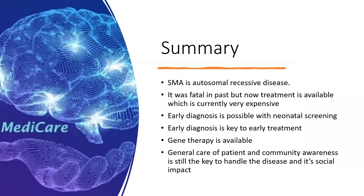In summary, SMA is an autosomal recessive disease that was fatal in the past but now has available treatments, though they are very expensive currently. With time and increased market competition, costs should decrease. Early diagnosis is possible and should be part of neonatal screening as the key to early treatment. Gene therapy is available. General patient care and community awareness remain key to managing the disease and its social impact. Early referral to a neurophysician or neuromuscular subspecialist allows treatment options to be discussed and families to be guided accordingly.